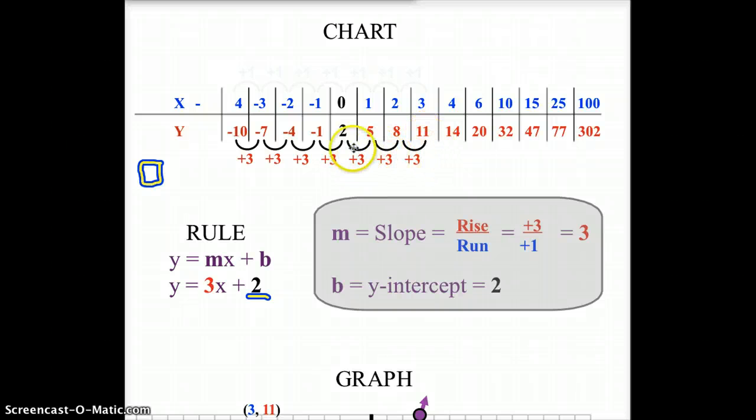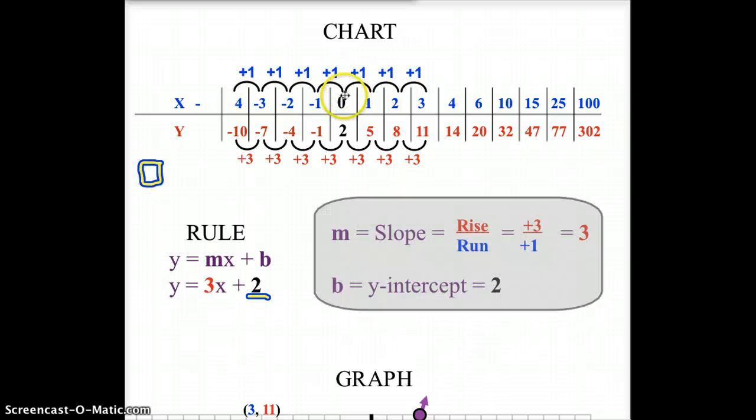Now, as this is going up 3 every single time, we also have to put that over the run. The run is what's happening to your x-coordinate point. So, if I click up here, you'll notice that the x-coordinate points are going up 1 every single time. So, the rise would be this plus 3 that happens every single time, over the plus 1, which happens every single time. So, the rise is 3. The run is 1. 3 divided by 1 equals 3.